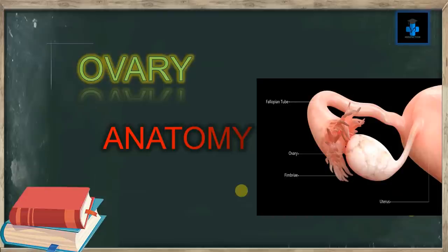Welcome to Medifaction. Today let's learn about the anatomy of the ovary. The ovary is an organ found in the female reproductive system that produces an ovum. When an ovum is released, it travels down the fallopian tube into the uterus where it may become fertilized by a sperm.